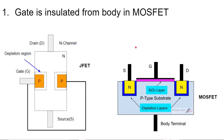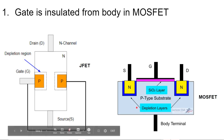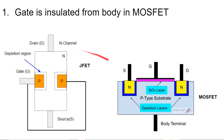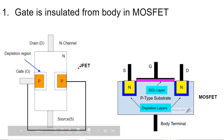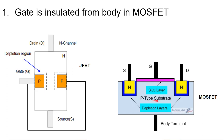Let's start to understand the difference in structures — how the structure of JFET is different from the structure of MOSFET. We have taken the examples of N-channel JFET as well as N-channel MOSFET. In case of N-channel JFET, the body is made of N-type semiconductor material, but in case of MOSFET, the body is made of P-type semiconductor material, also known as P-type substrate.